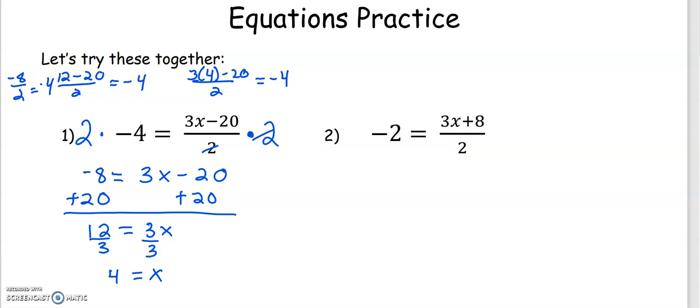We'll take a look at number 2. The process is the same. We're going to multiply by 2 to clear our fraction. On the right side, those 2s cancel out. On the left side, we have negative 4 equals 3x plus 8.